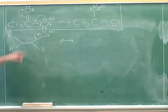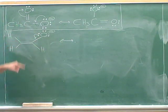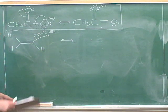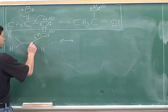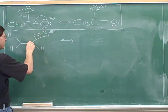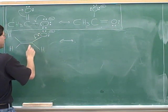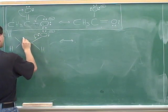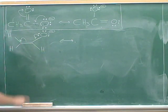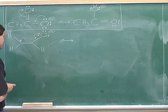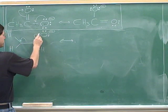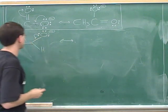Now if all we did was move this lone pair into a pi bond, we would be drawing something illegal. That would be illegal because this carbon already has a full octet, so it can't be receiving a new pi bond unless we also break this pi bond. So we're going to have to do these two moves simultaneously — we're going to have to move this pi bond over here to make room for these electrons that are coming in.